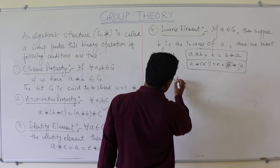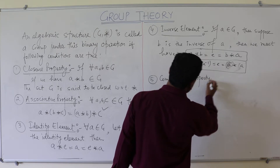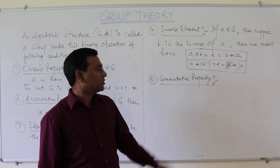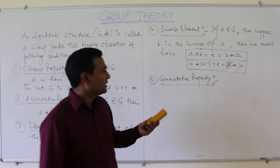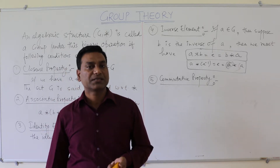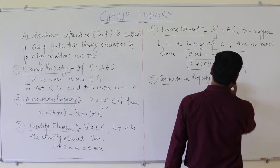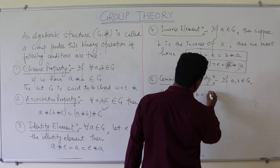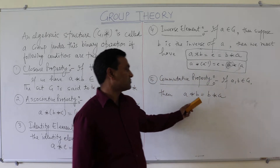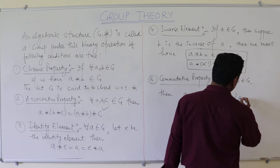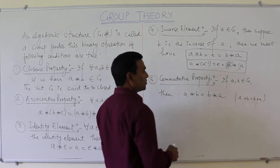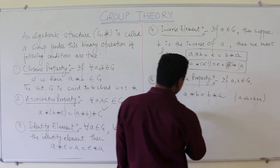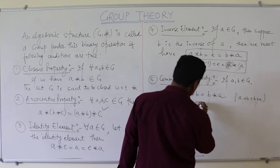The fifth property is the commutative property. This is a very important property. If this property is held by the group, it means that group is a commutative group. If a group is commutative under binary addition or binary multiplication, then that group is known as an abelian group. If a, b belong to G, then a · b = b · a (or a + b = b + a for addition). In this case, the group is known as the abelian group.